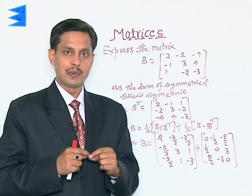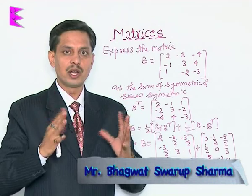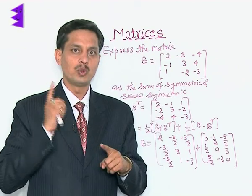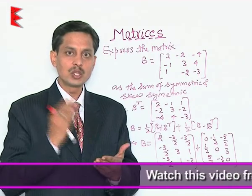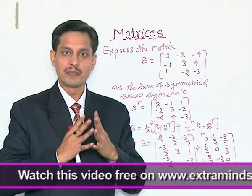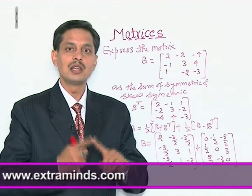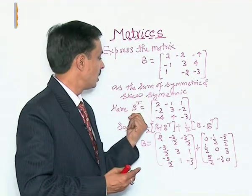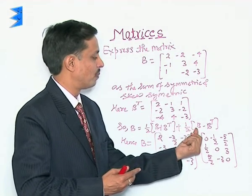Now, I am taking an example where one square matrix needs to be expressed as the sum of two matrices — one symmetric and one skew-symmetric. As I mentioned, when any square matrix is added to its transpose the result is symmetric, and when the transpose is subtracted from it the result is skew-symmetric. So we will use the concept that B equals half of (B plus B transpose) plus half of (B minus B transpose).